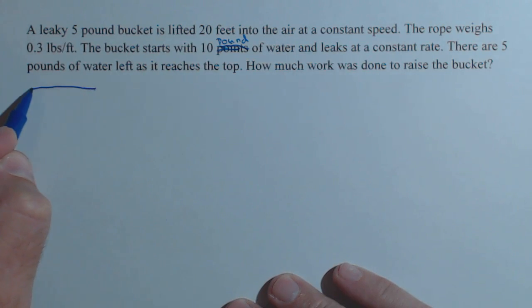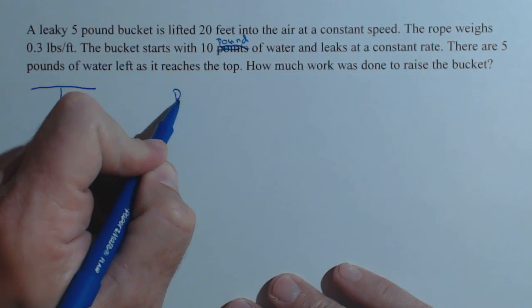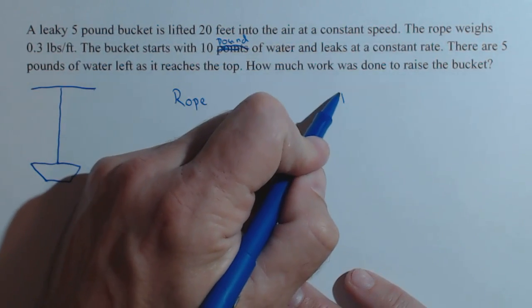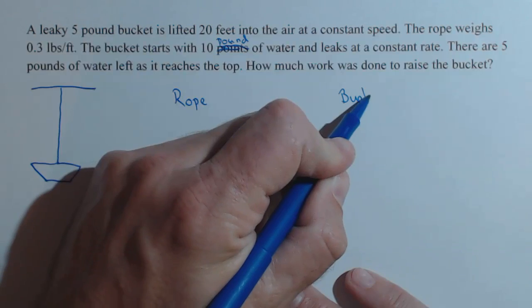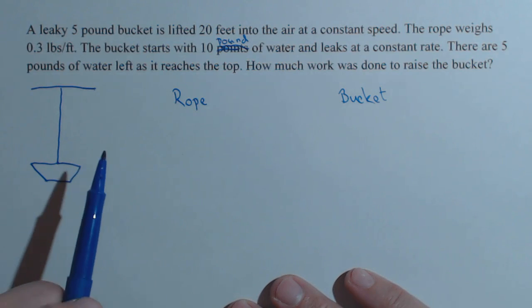So let's draw a picture of what's going on, and we'll label our picture. So here is our bucket, and we're going to break this into two pieces. We're going to look at the rope and the bucket separately, not that we couldn't do them together, but just because I want to emphasize slicing and how we can look at it here.